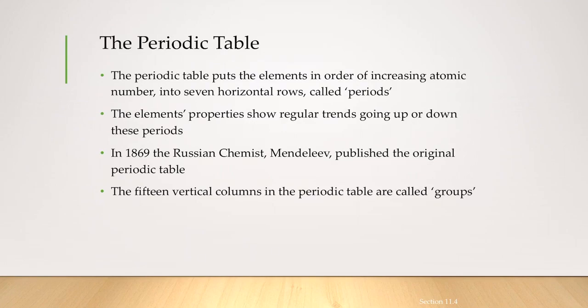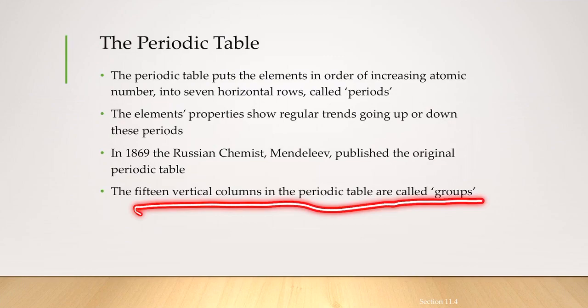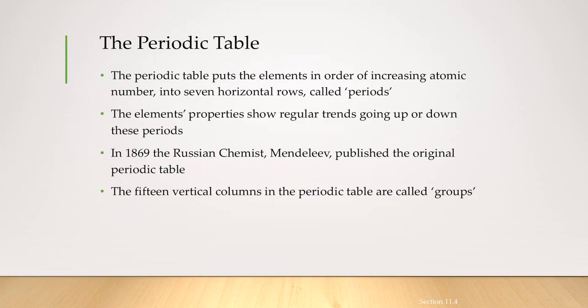The periodic table puts the elements in order of increasing atomic number into seven horizontal rows, which are called periods. There are also 15 vertical columns in the periodic table, which are actually called groups. The elements' properties show regular trends going up or down these periods.